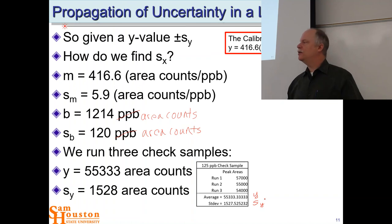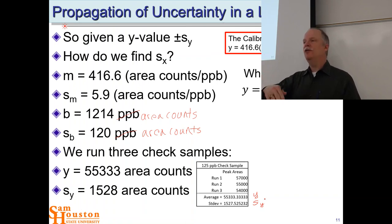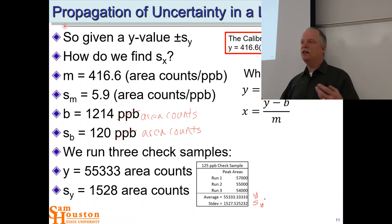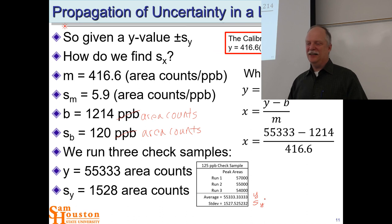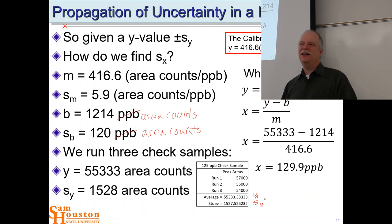What we're looking for is the uncertainty in x. We can calculate x by inverting the linear equation y = mx + b: subtract b from both sides and divide both sides by m to isolate x. So x = (y − b) / m. Plugging in: (55,333 − 1,214) / 416.6 = 129.9 parts per billion. We put in a 125 ppb check sample and got 129.9 — how could we be so wrong? But before we panic, let's see if our confidence interval includes 125.